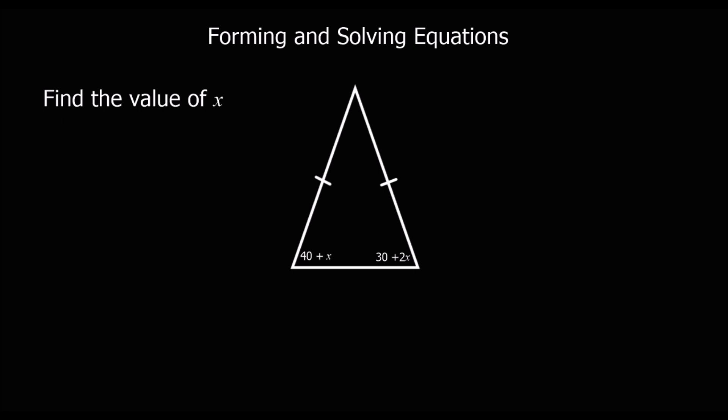We've got a shape here, and these two lines mean that the two lengths are equal. This is telling us it's an isosceles triangle. In an isosceles triangle, two lengths are the same, and the two angles at the base are the same.